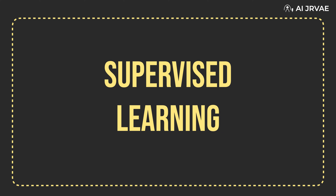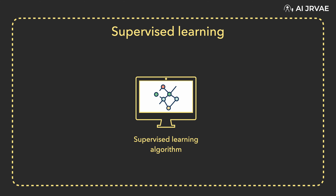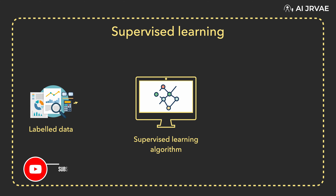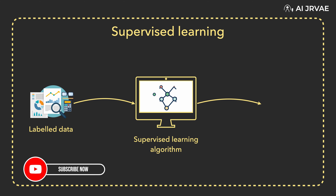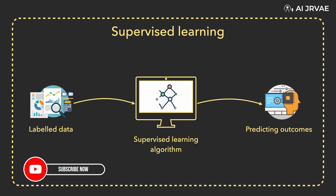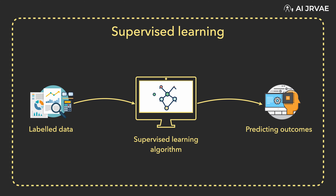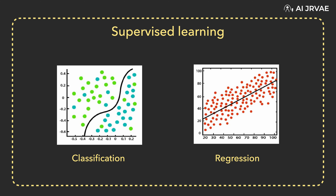In supervised learning, the computer is taught by example. It learns from past data which is labeled and applies the learning to present data to predict future events. Both input and desired output data provide help to prediction of future events.